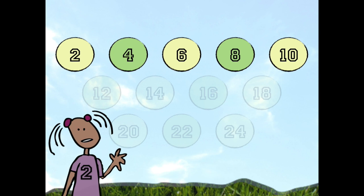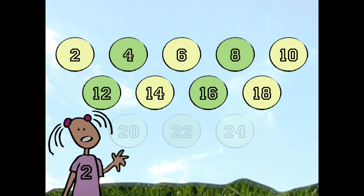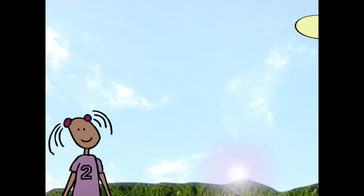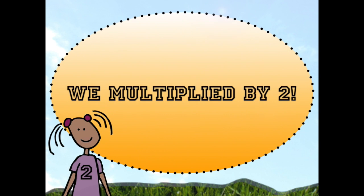2, 4, 6, 8, 10, 12, 14, 16, 18, 20, 22, 24. We multiply by twos!